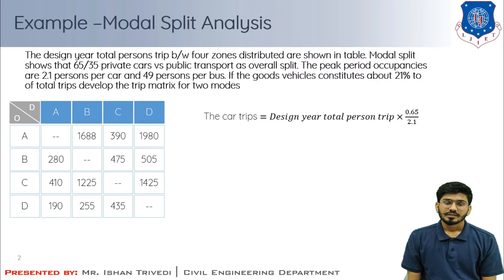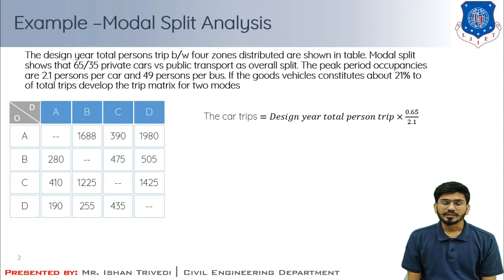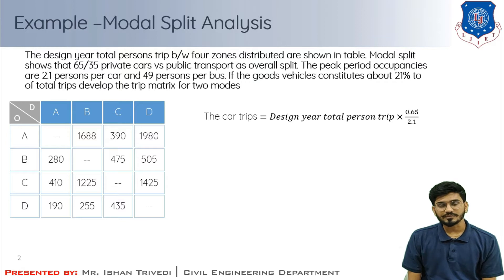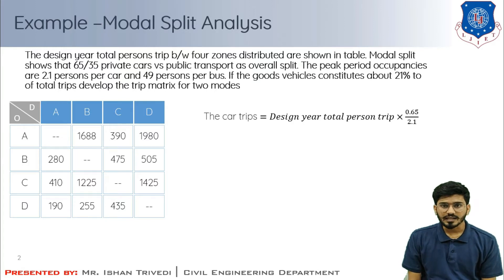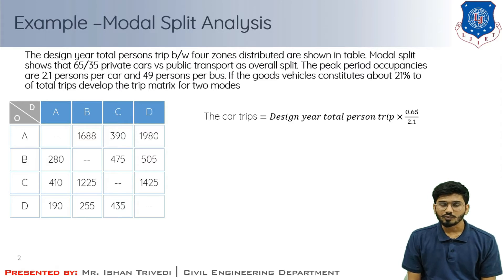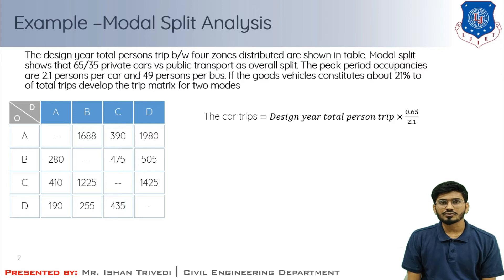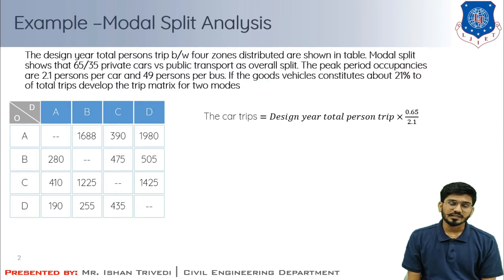The car trips formula is: design year total person trips × 65% divided by the occupancy. For the A-to-B cell, the design year total person trips is 1688. Out of 1688, 65% of people are using private car with a car occupancy of 2.1. So, out of 100 passengers 65 use a car, and if one car carries an average of 2.1 passengers, we can find the number of car trips.